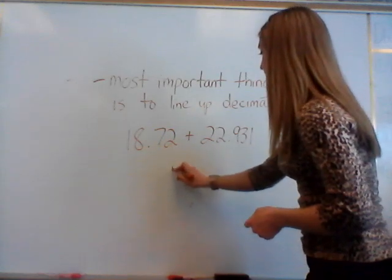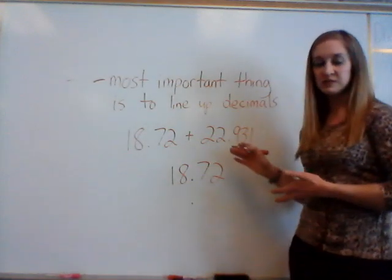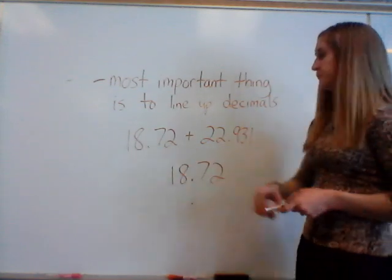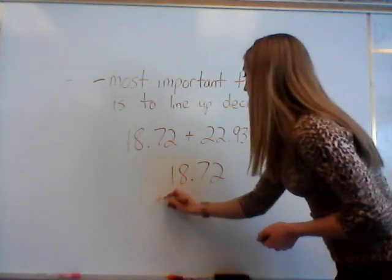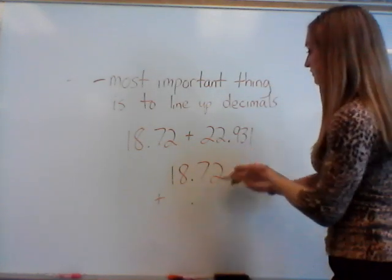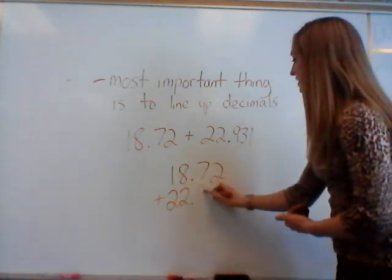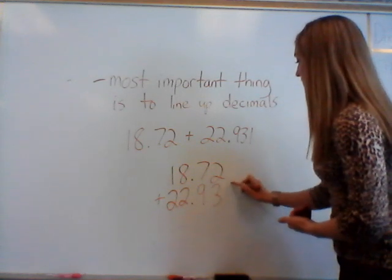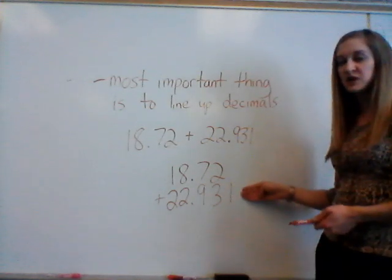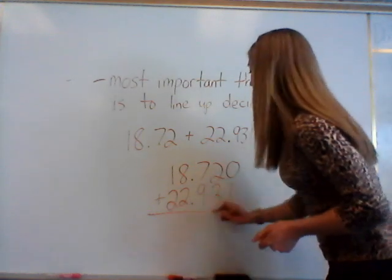Then I'm going to start plugging in my numbers. When adding, I can put either number on top — it really doesn't matter. But when subtracting, I have to put whatever number is first on the top. Here I'm adding, so I'll put the first number on top. To the left of the decimal I have 1 and 8, then 2 and 2. To the right I have 7 and 2, then 9, 3, and 1. I notice I have nothing in the thousandths place for one number, so I can use a zero as a placeholder.